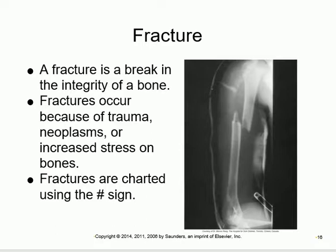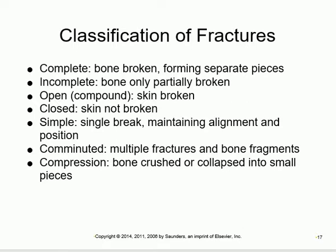There are different types of fractures. Classification number one: complete versus incomplete. Incomplete means the bone is still one piece with part of it fractured; complete means the bone separates into two pieces. It can be open (compound) - meaning the skin is affected - or closed, where the skin remains intact.